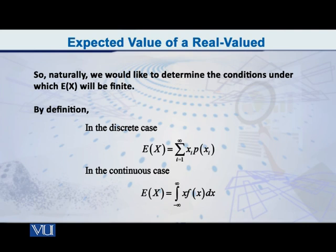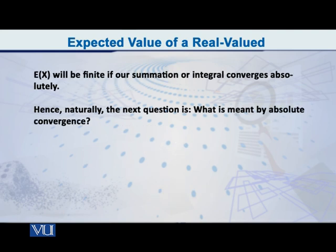What is the definition of the expected value of X? We all know that in the case of a discrete random variable, E of X is equal to summation of xᵢ times p of xᵢ, and in the continuous case it is the integral of x times f of x. This E of X will be finite if our summation or our integral converges absolutely. If absolute convergence holds, then E of X is finite and we say that it exists.